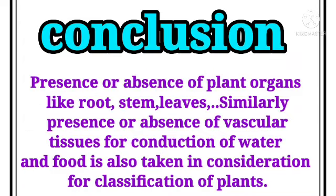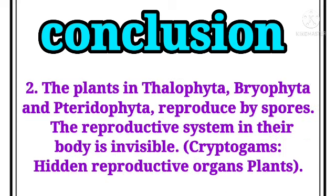Conclusion: absence or presence of plant organs like root, stem, and leaves, and similarly presence or absence of vascular tissues for conduction of water and food, are taken into consideration for classification of plants. The plants in Thallophyta, Bryophyta, and Pteridophyta reproduce by spores; the reproductive system in their body is invisible. Cryptogames means hidden reproductive organs of plants.